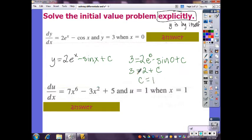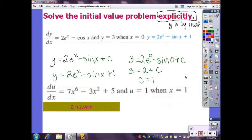So my general solution is y equals 2 times e to the x minus sine of x plus c. My particular solution would be y equals 2e to the x minus sine of x plus 1. And if we wanted to check our answer, yay we got it right.